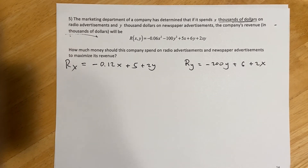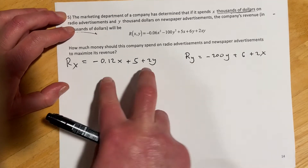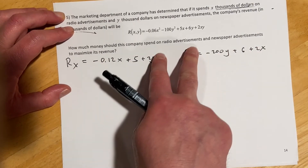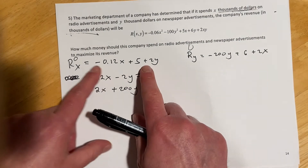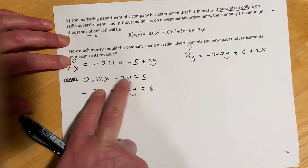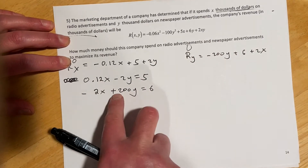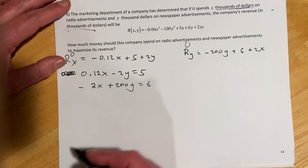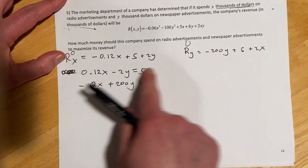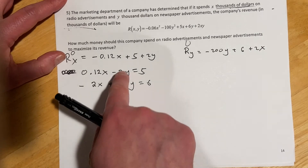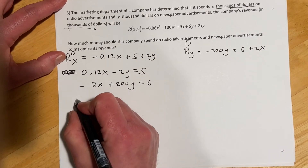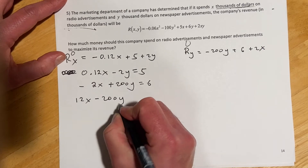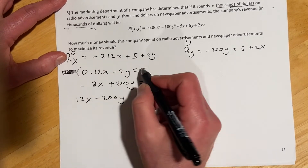That gives us a couple of linear equations, so we'll solve a system. I'll bring the x's and y's to one side and leave the constants on the other, since we're setting these to zero. I'm not loving the decimals, so I'll multiply the first equation by 100 to clear them, giving me 12x minus 200y equals 500.